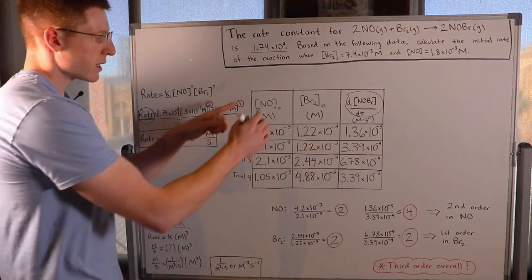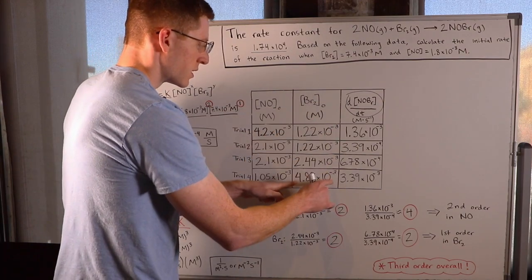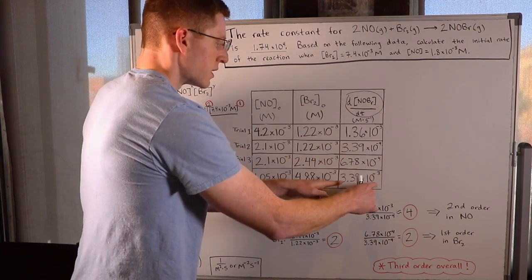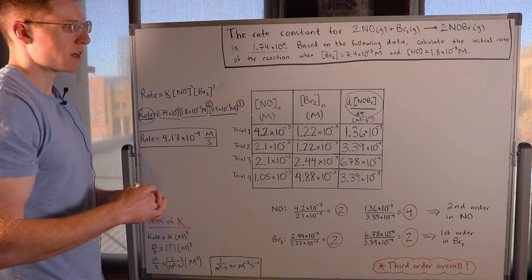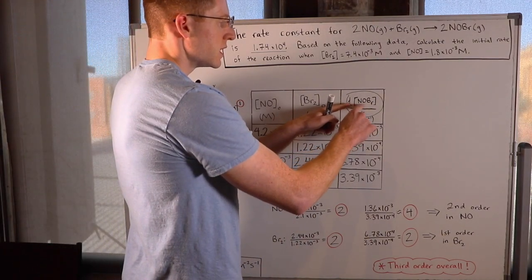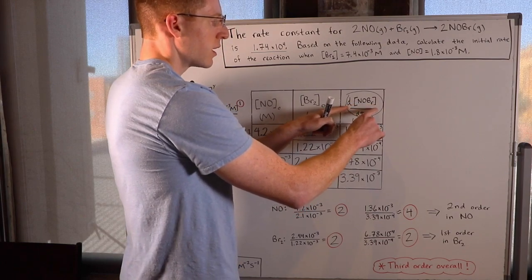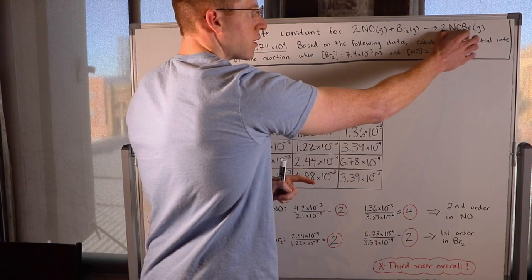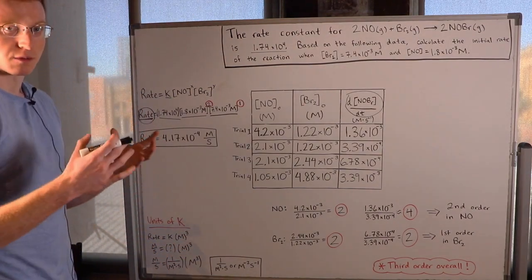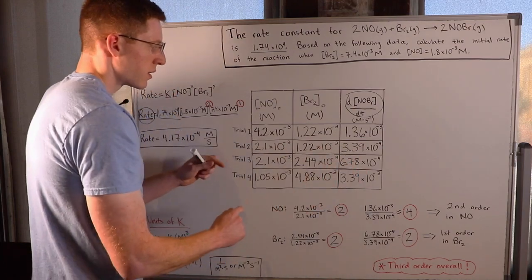This column is the initial concentration of NO, this column is the initial concentration of Br2, and this column is the overall rate of the reaction. Another way to write that is dNOBr/dt, which stands for the rate of production of NOBr — just an indirect way of measuring the rate of this reaction. Each horizontal row here is a trial.